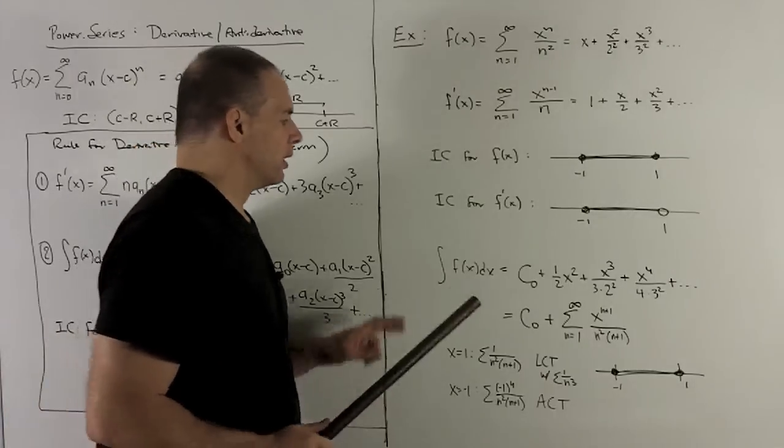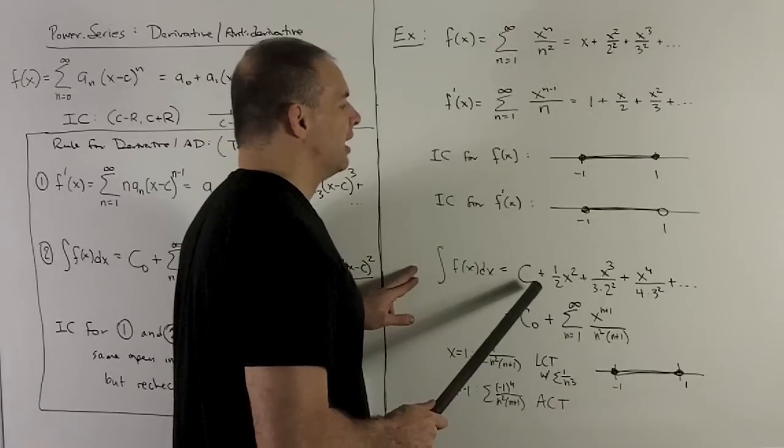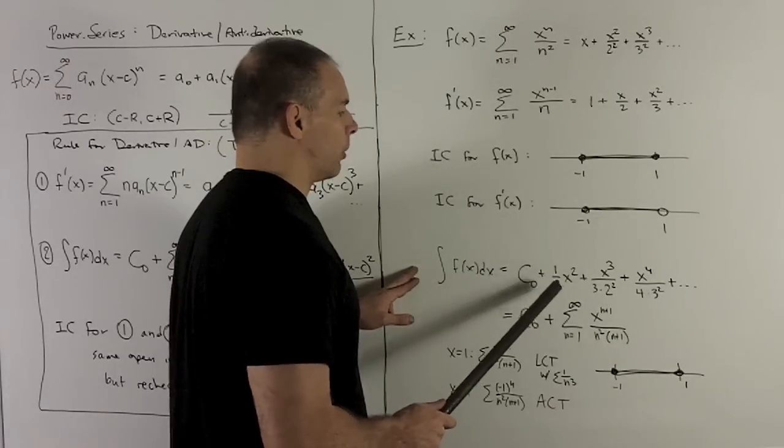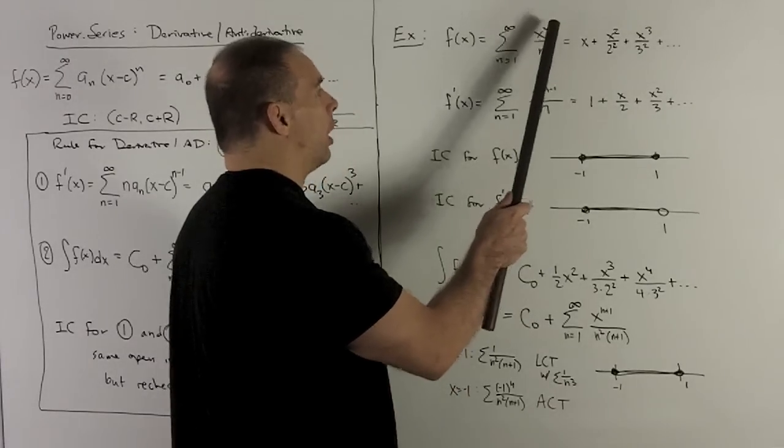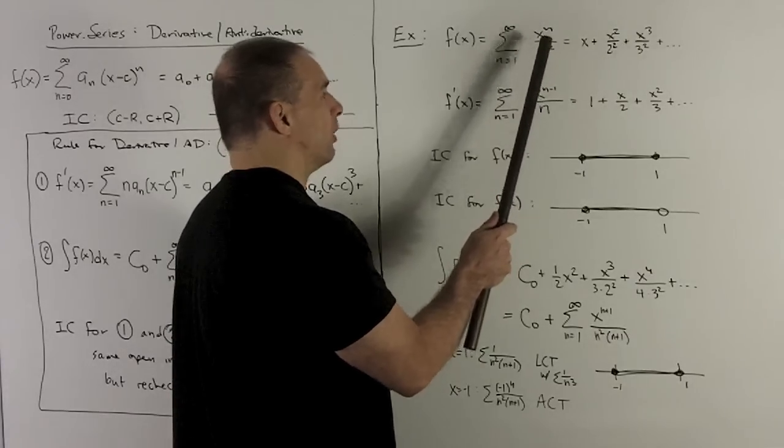How about the antiderivative? The rule here is going to be, throw in your constant of integration, and then just integrate like you normally would. So we're going to add one, flip it over, which is going to give me x to the n plus one. We'll have an n squared, and then we'll have n plus one in the bottom.